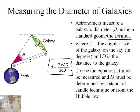d is 2πAD/360. They measure a galaxy's diameter d using a standard geometric method, where A is the angular size. We've talked about that before. And D is the distance to the galaxy. Where are you going to get the D? Well, from the methods we've learned before, either from the standard candle method, or the Cepheid star method, or by the Hubble law.